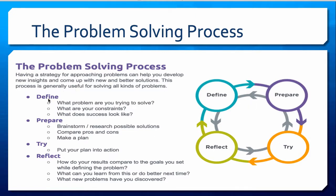There are four steps. First, we can define: what problem are we trying to solve, what are our constraints, and what does success look like? These are all important things. If you don't know what you're trying to solve, you may come up with a fix that actually doesn't really fix the problem.